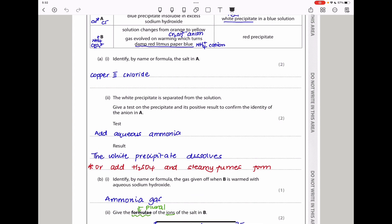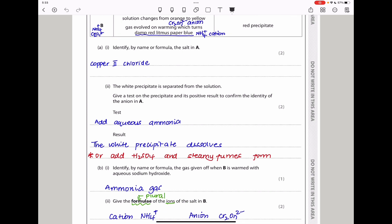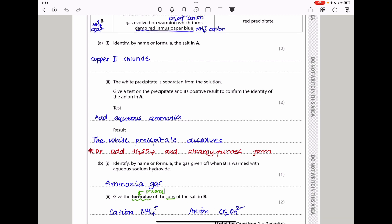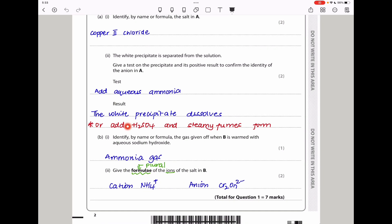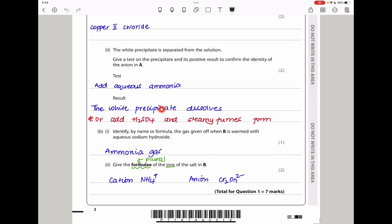Moving on, they say the white precipitate is separated from the solution. Give a test on the precipitate and its positive result to confirm the identity of the anion in A. We have observed the anion in A is chloride, so if we want to confirm or be sure that it's actually chloride, we need to add aqueous ammonia. If you add aqueous ammonia, the white precipitate is supposed to dissolve. If it does dissolve, then that was a chloride anion present in there.